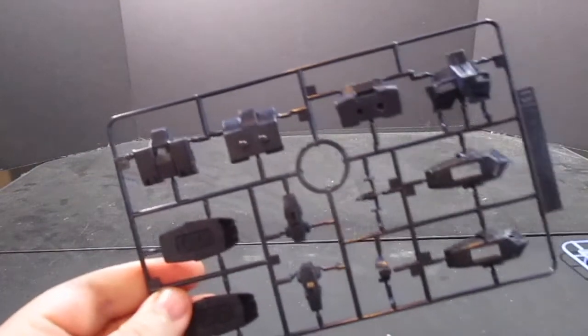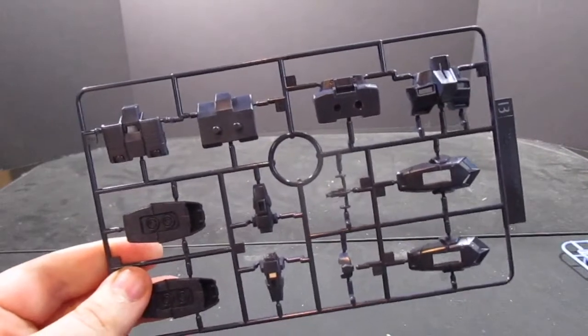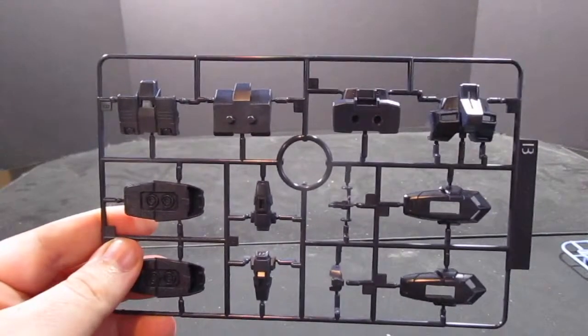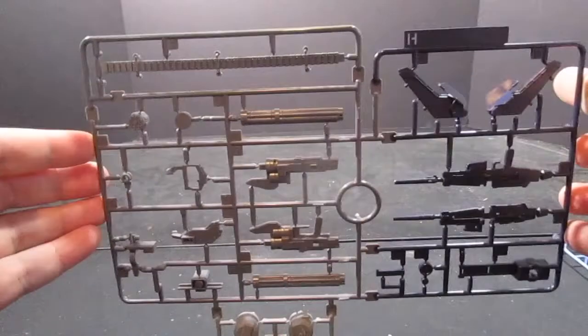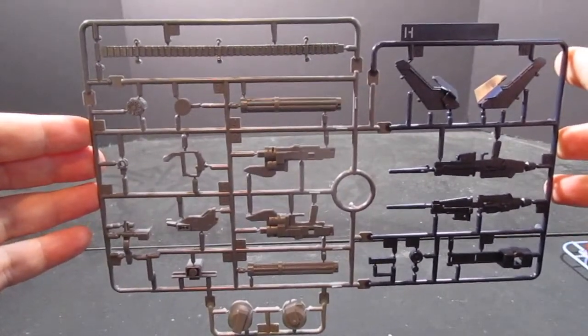Our first tree of navy blue, which has some of the outer armor and the feet and the leg thrusters. A multicolor plate for the rifle and the gatling gun, one of my favorite weapons on this kit by the way.